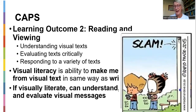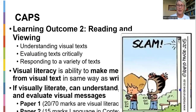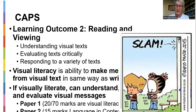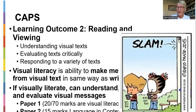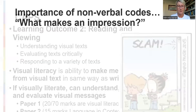In paper one, visual literacy accounts for about 20 of your 70 marks for home language FETs and about 18 marks for first additional language. For SPs, about 15 to 20 marks in paper two relate to visual literacy in the language in context section. So it's quite a high percentage — visual literacy comes into all the language papers.